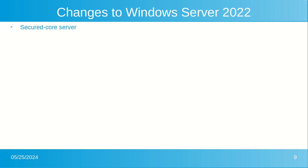The Secure Core Server uses hardware, firmware, and driver capabilities to enable advanced Windows Server security features. Many of these features are available in Windows Secure Core PC, but now they are also available with Secure Core Server hardware and Windows Server 2022.